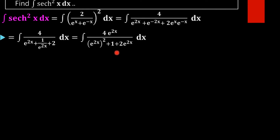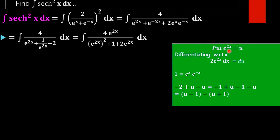Taking e^(2x) to the numerator, we get 4·e^(2x). This function is not in an integrable form, so we make a substitution: put e^(2x) = u. On differentiating with respect to x, we get 2·e^(2x) dx = du.